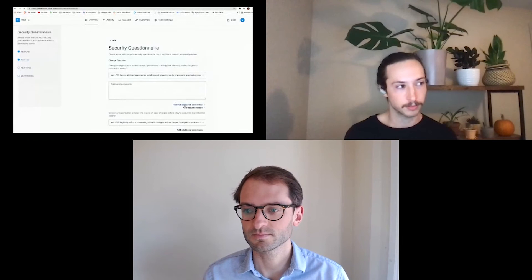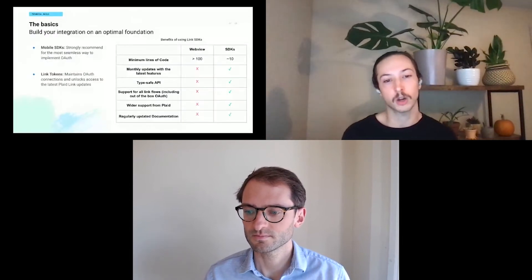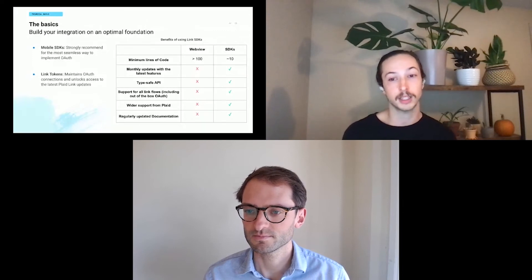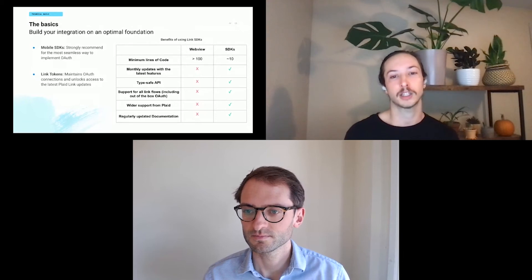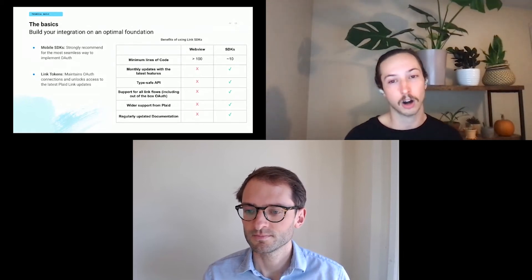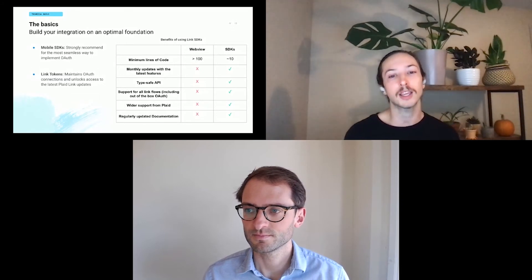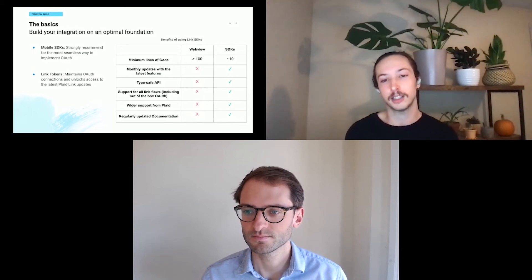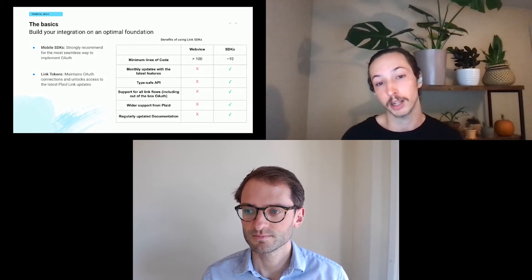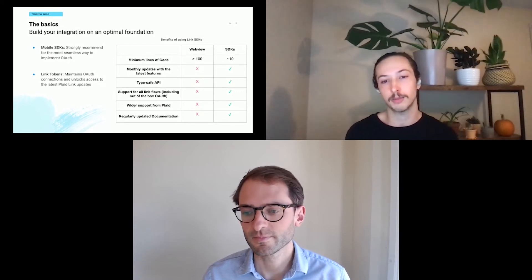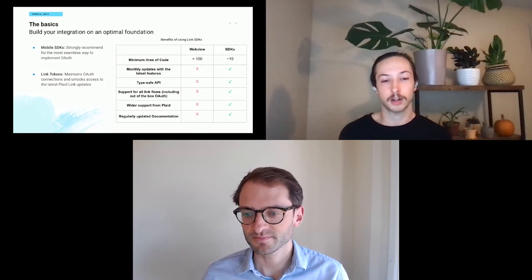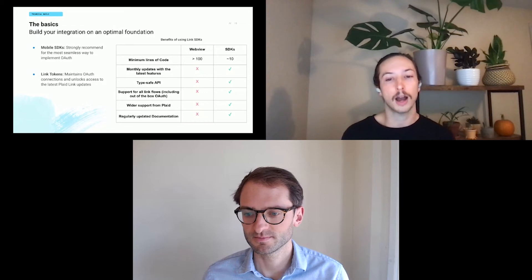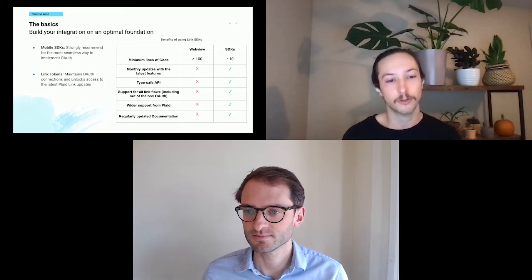Whether you're new to Plaid or working with webviews or iframes, this is a great opportunity for your development team to use our mobile SDKs. The amount of lines of code required is around tenfold less. We provide monthly updates with the latest features, it's a type-safe API, and we support all Link flows including OAuth out of the box. There's wider support from Plaid for mobile SDKs and regularly updated documentation. If you're an existing customer using public keys, you're required to move over to Link tokens to implement OAuth.